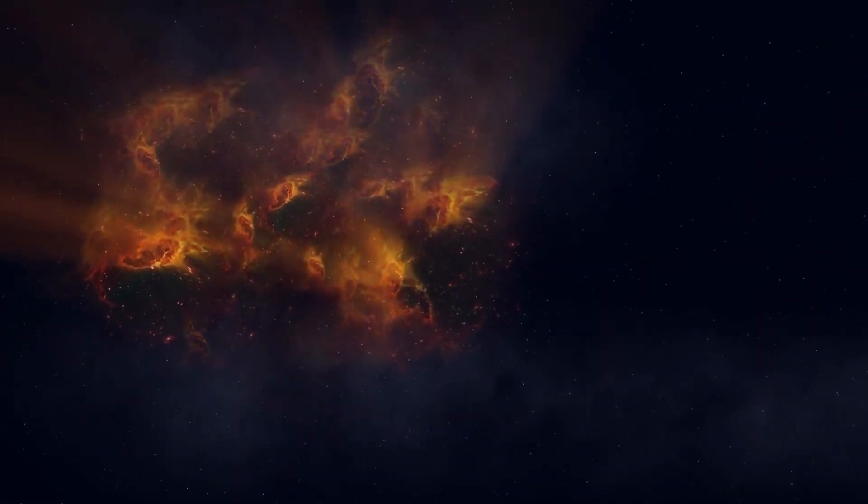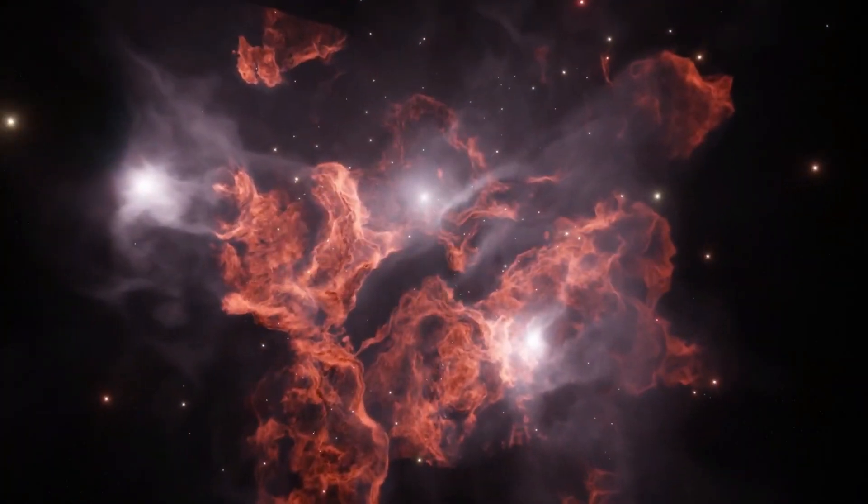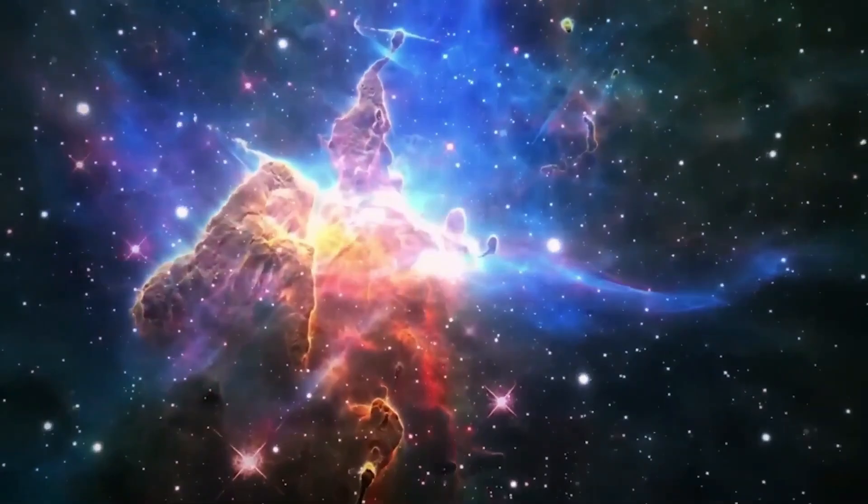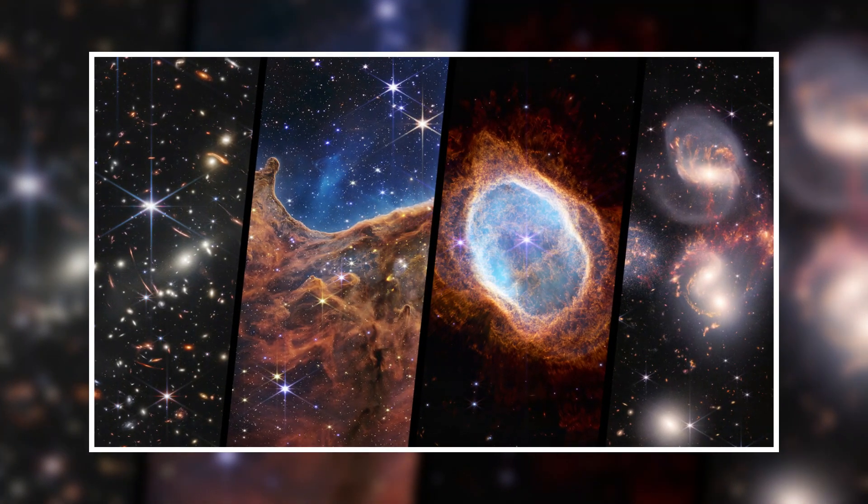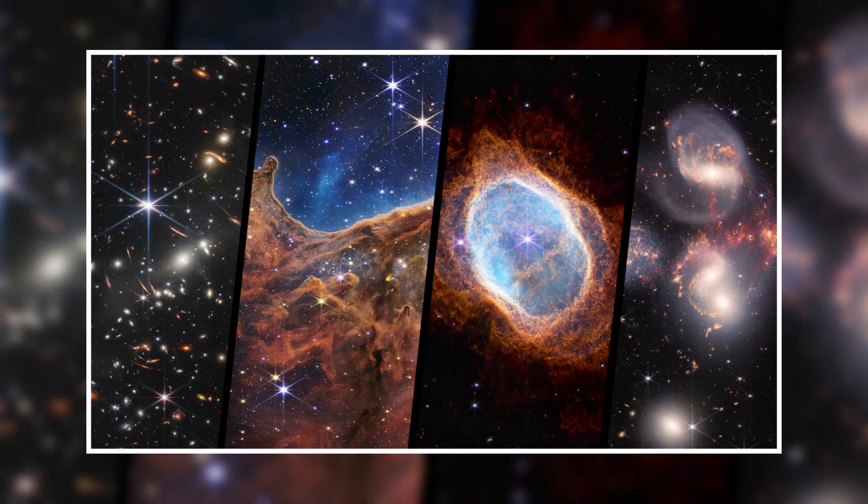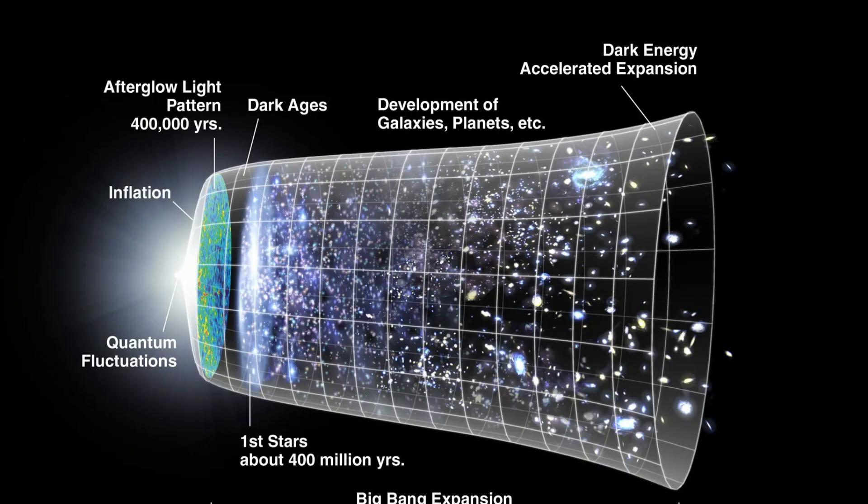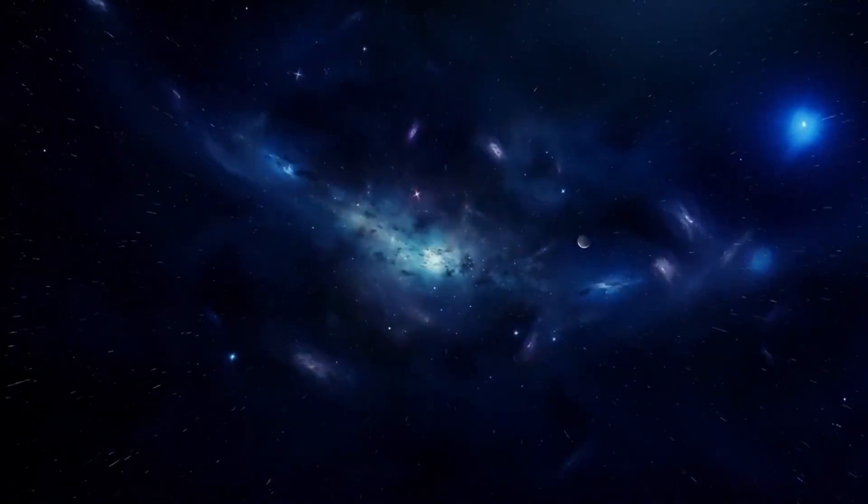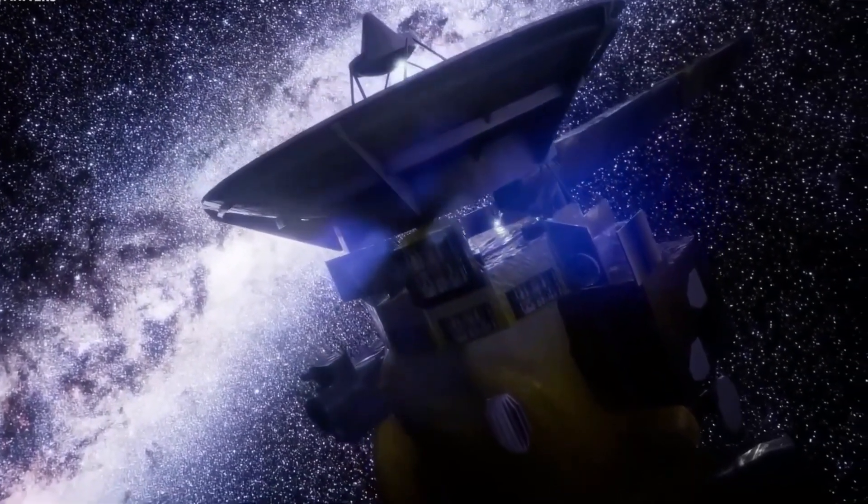They were found in a new study that used Webb's first set of data. By looking at the light these galaxies gave off, astronomers found that they were only 500-700 million years after the Big Bang. These very old galaxies are not a surprise in and of themselves. In the first 400 million years of the universe's life, when space was filled with nothing but hydrogen atoms, these galaxies have shown us more than we thought possible. It was thought by astronomers that the first star groups would form soon after the universe came out of the Dark Ages.